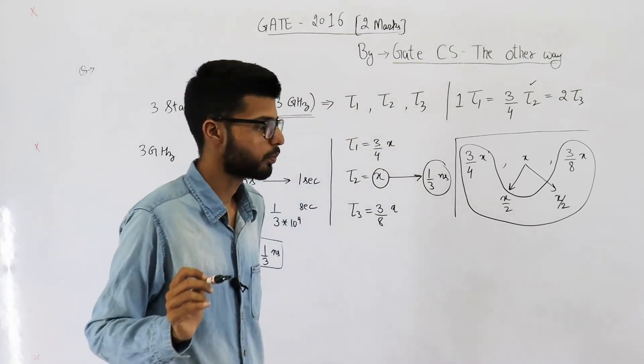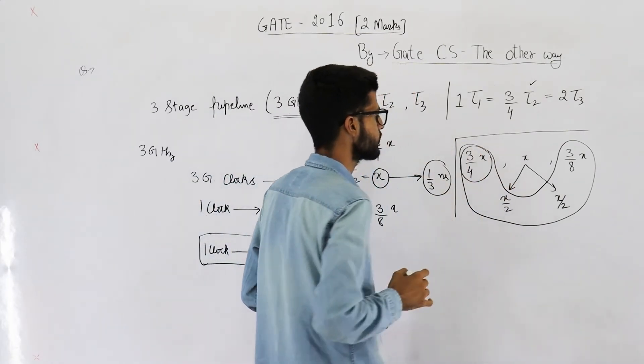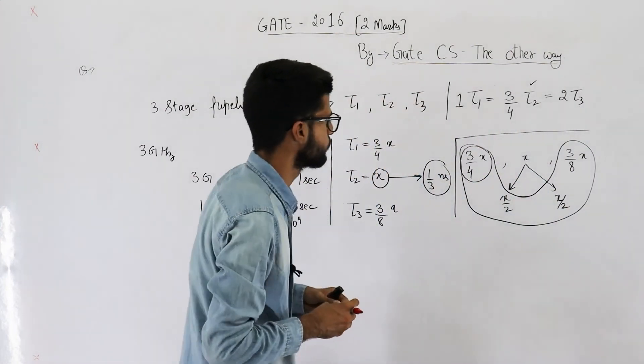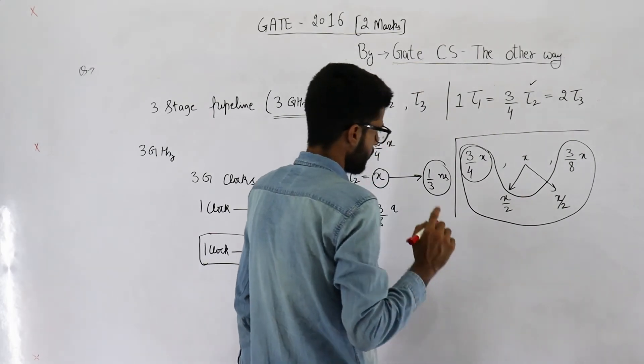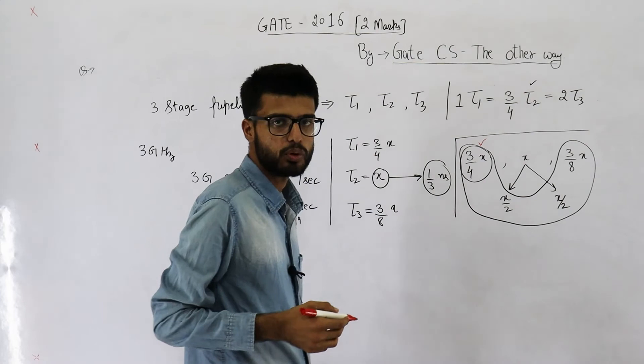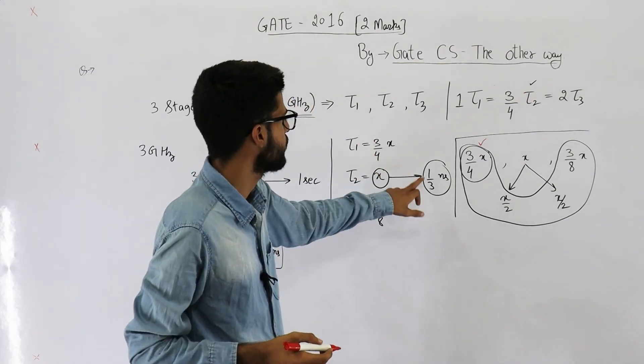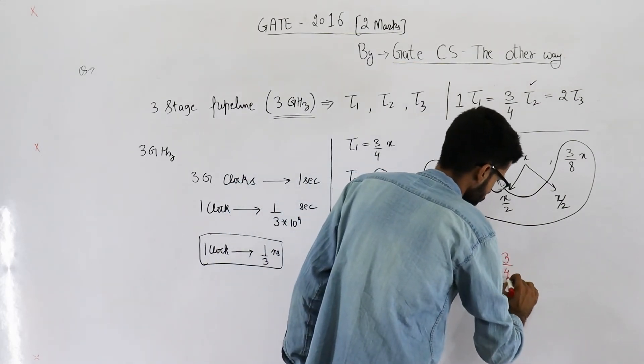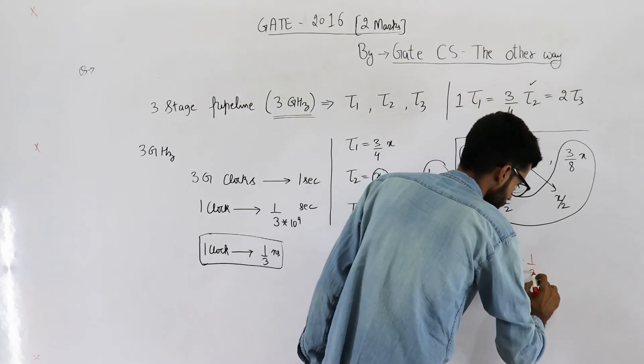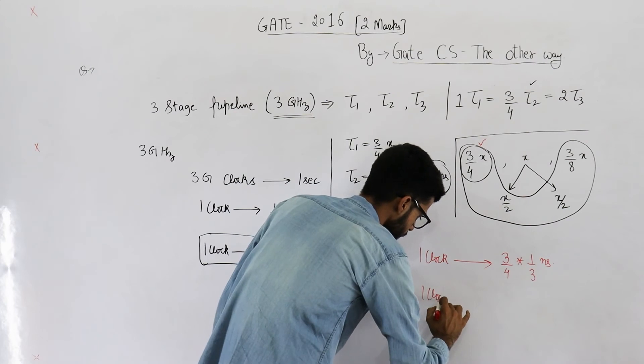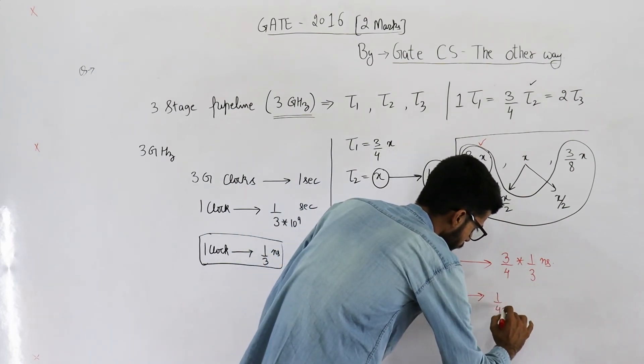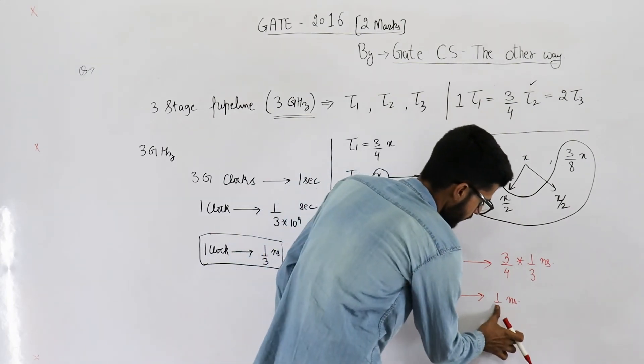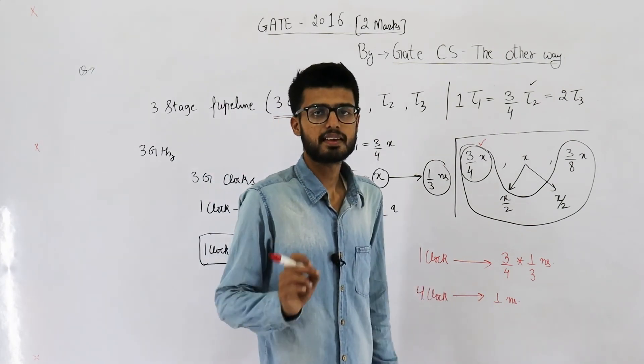That means time period of new processor depends on first stage which is 3 by 4x. For the new design, we will generate 1 clock after every 3 by 4 seconds. And you very well know x is 1 by 3. So, 1 clock takes 3 by 4 into 1 by 3 nanoseconds. Now, you bring 4 to this side. That means 4 clocks require 1 nanosecond.